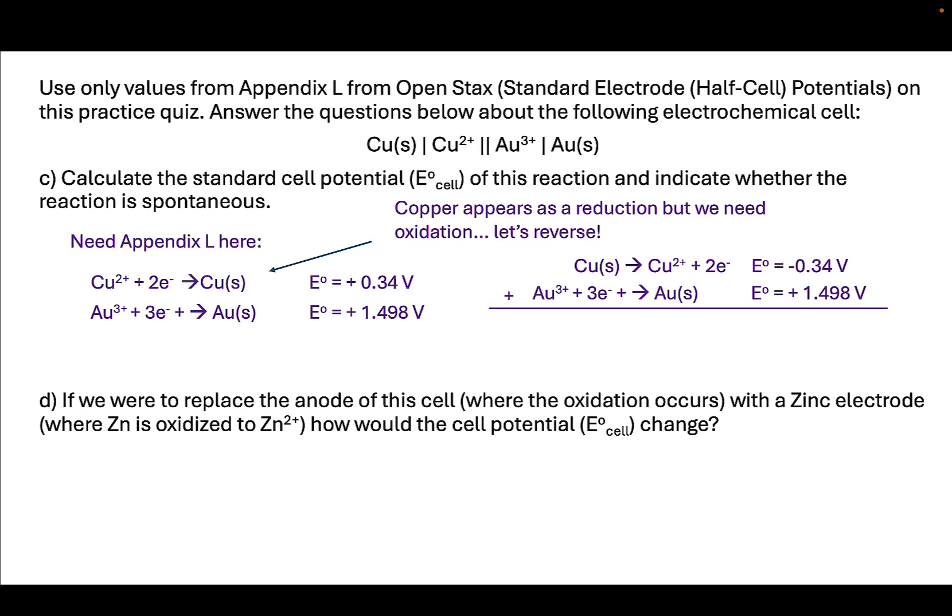Once we have this, we simply add through. We know that the standard cell potential is now going to be the sum of these two half cell potentials—one is a reduction, one is an oxidation. We do not want to multiply the potentials here. While that will inevitably affect the energy out of the reaction per mole, it's not going to change the voltage, which is a measure of how much energy each electron has.